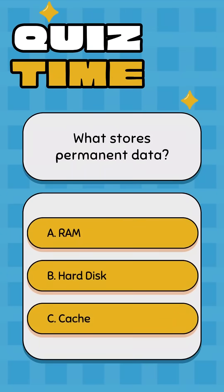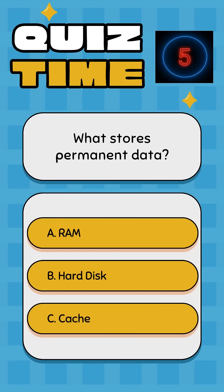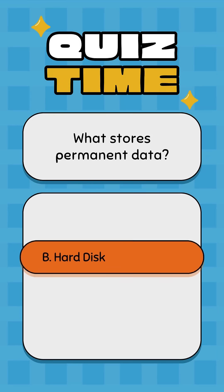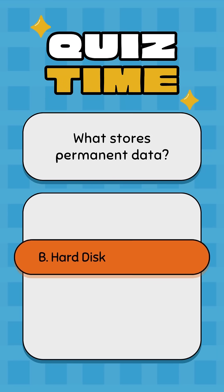What stores permanent data? A: RAM, B: Hard Disk, C: Cache. Correct answer: B, Hard Disk.